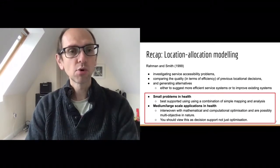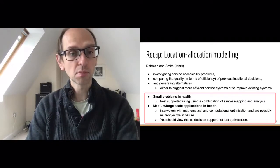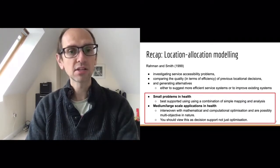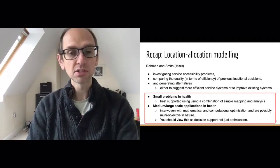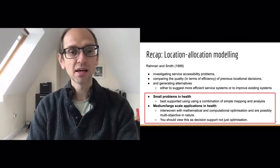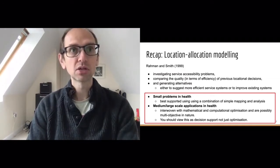This is linked to optimization. Sometimes the problems you'll be dealing with — for example, if you're working with a single health facility — might be a small problem. In those cases, it's best to support that as simply as possible. A mix of geographic maps to understand where demand is coming from and basic analysis is the best way to support those decisions. It might include enumerating all possible solutions because there's only a small number of combinations to look at.